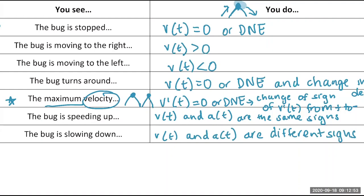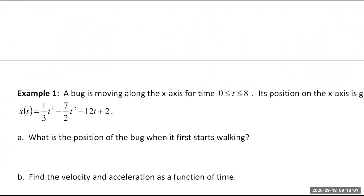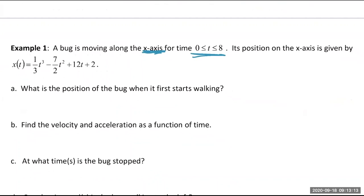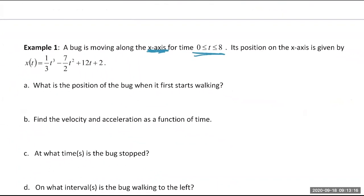Example 1: a bug is moving along the x-axis, time restricted to zero to eight, and the position function is given. First, find the position when it first starts walking — that's at t = 0. Plugging in zero zeros out all terms with T, leaving us with the constant 2. So the position when the bug first starts is X of 0 equals 2.